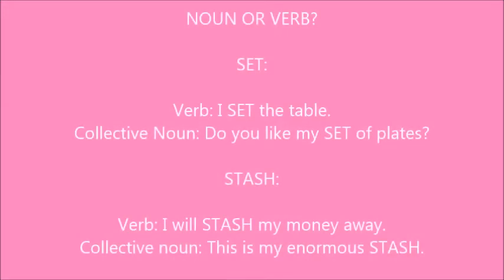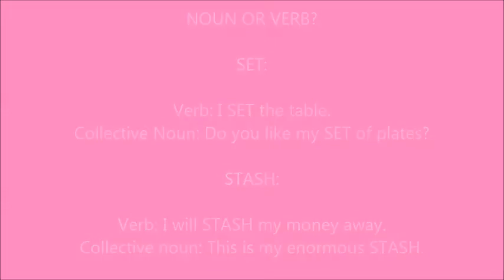Don't forget that these collective nouns can also be used as verbs — this happens a lot. Nouns and verbs — it causes confusion. It all depends how it's written. 'I set the table' — that's a verb. 'Do you like my set of plates?' — there, 'set' is a collective noun. 'I will stash my money away' — that's written as a verb. 'This is my enormous stash' — there it's a collective noun.